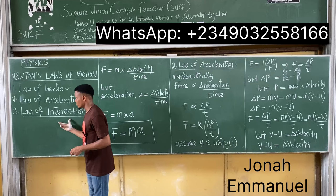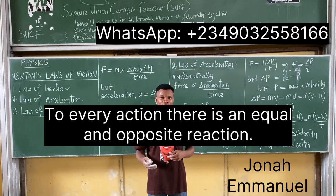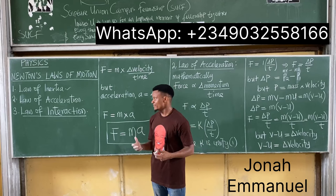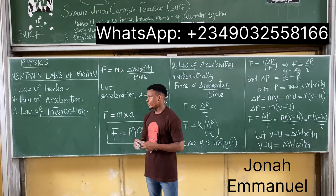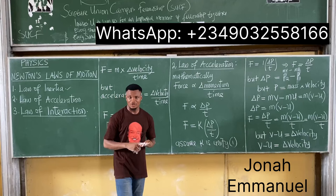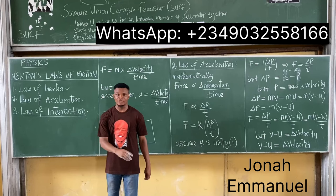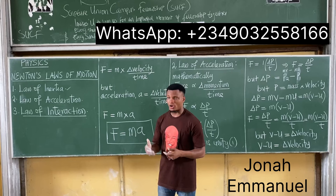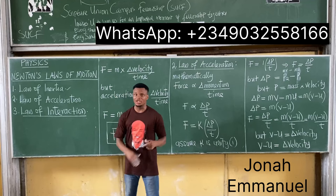Now let's look at Newton's Third Law of Motion, called the Law of Interaction. It simply states that to every action there is an equal and opposite reaction. We'll look at how to apply the Law of Interaction to things like the recoil of a gun in our next class.